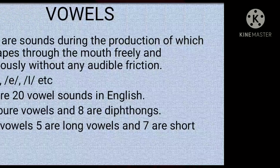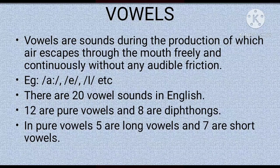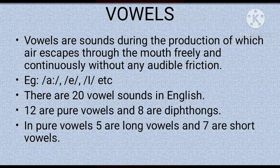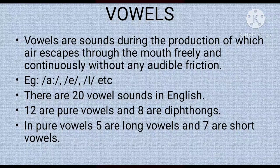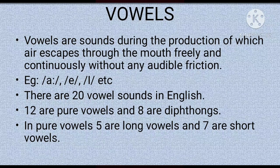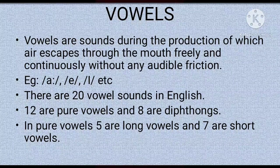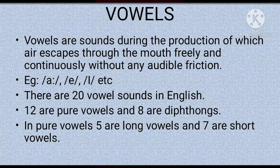Now let's check these sounds in detail. First, we are considering vowel sounds. Vowels are sounds during the production of which air escapes through the mouth freely and continuously without any audible friction. When you utter a vowel sound, the air from our lungs escapes through our mouth freely and continuously without any audible friction. For example, when you pronounce 'a' or 'e', air from our lungs passes very freely and continuously through our oral cavity without any friction. Such sounds are known as vowel sounds.